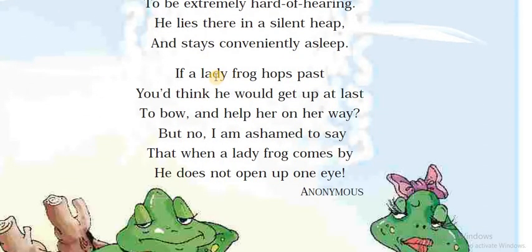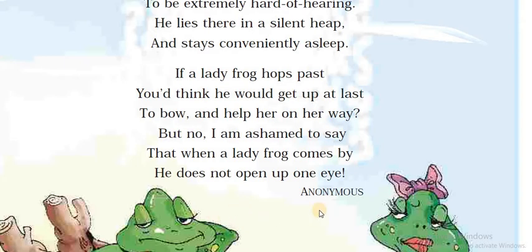If a lady frog hops past, you would think he would get up at last to go and help her on her way. But no, I am ashamed to say that when a lady frog comes by, he does not open up one eye. And for this poem, who is the poet? We do not know. So here it is written 'Anonymous.' Anonymous means we do not know who has written the poem.